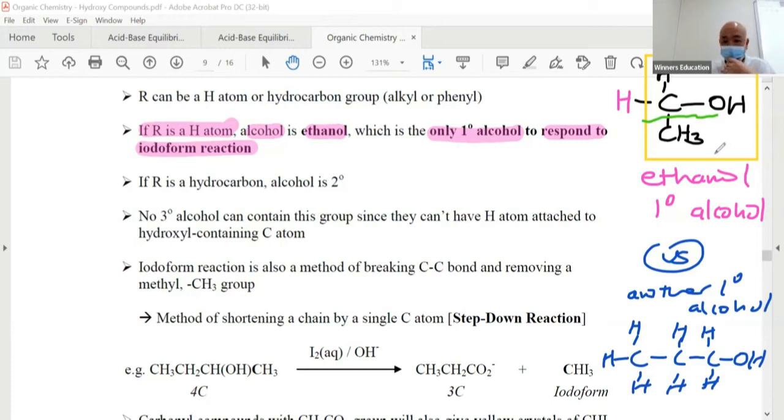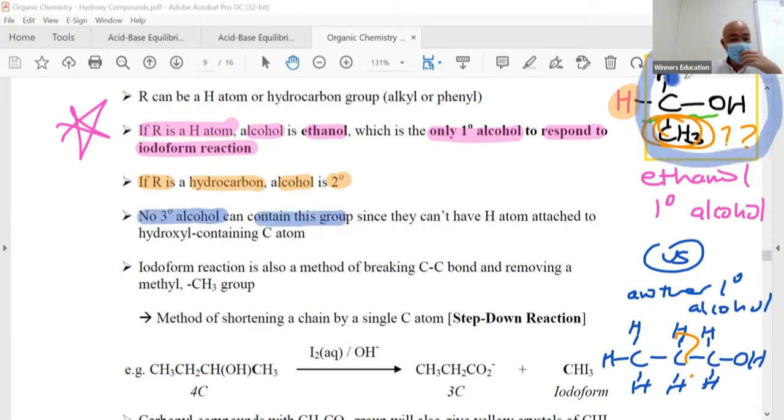Ethanol, it doesn't have, if you look at me, it doesn't have this one. It doesn't have this one. Alright? It's not here. Make sense? Alright? So this one, be careful, they love to test. MCQs. Next. If R is a hydrocarbon, alcohol is therefore secondary. So you change it to CH3, it becomes secondary alcohol. Now, which can undergo this particular reaction if you have the yellow color group set. Yes? No tertiary alcohol can contain such a group that you want because there's always a hydrogen here. So there's no way you have tertiary alcohol. Therefore, tertiary alcohol cannot undergo this reaction.